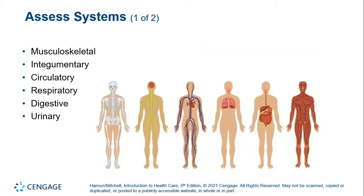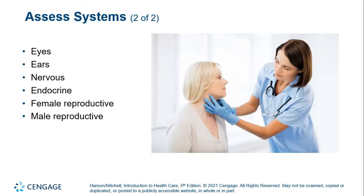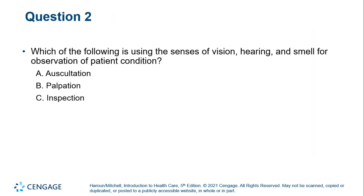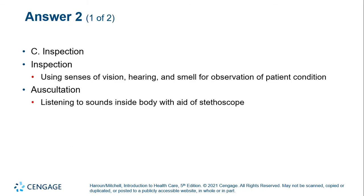We also assess systems. Here we see the primary systems of the body — eyes, ears, the nervous system, the endocrine system, and female and male reproductive systems. Which of the following uses the senses of vision, hearing, and smell for observation? This is an easy one — it's got to be inspection.